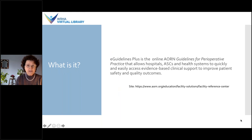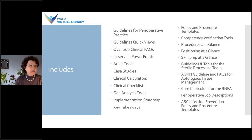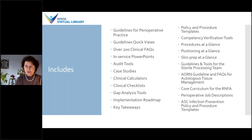According to their website, the eGuidelines Plus is the online AORN guidelines for perioperative practice that allows hospitals, ambulatory surgery clinics or centers, and health systems to quickly and easily access evidence-based clinical support to improve patient safety and quality outcomes. It is basically the online home for the evidence-based AORN guidelines for perioperative practice, plus integrated tools and resources for quick answers to your perioperative needs or questions.